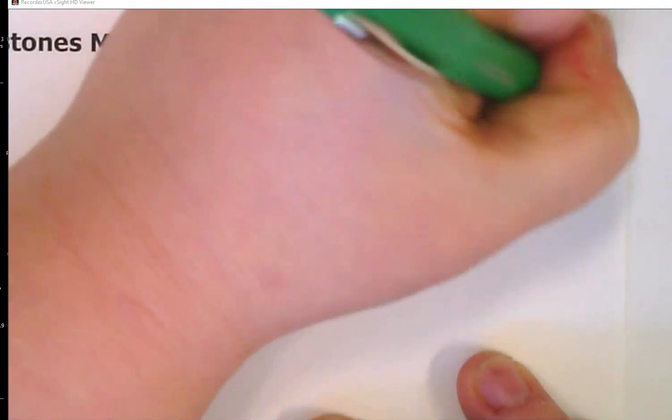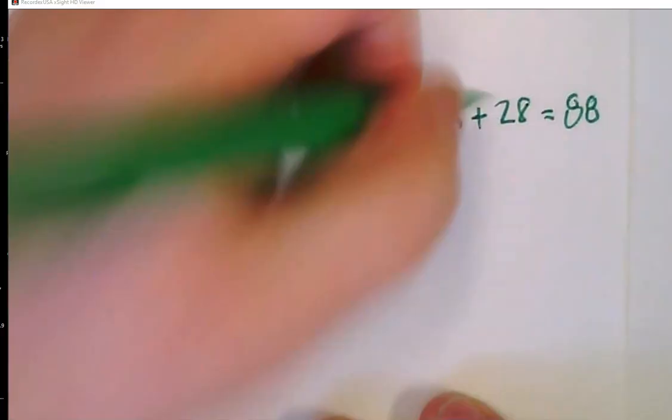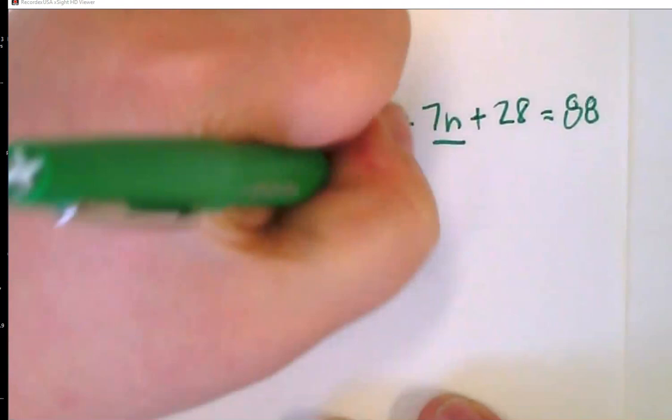Now that I've used my distributive property, I want to go ahead and combine my like terms. Well, 5n and 7n are like terms, so I can combine those. So now I have 12n plus 28 equals 88.